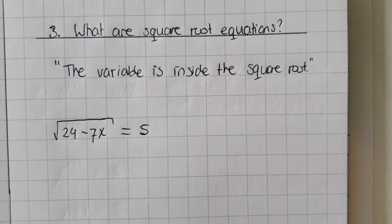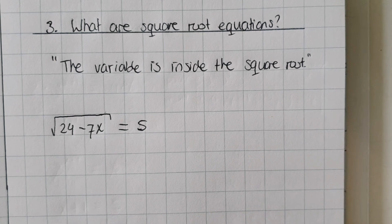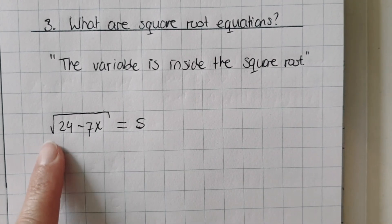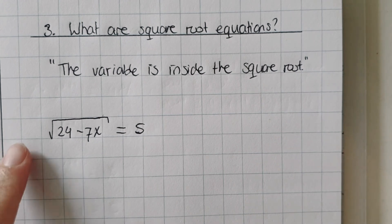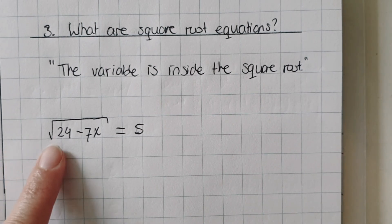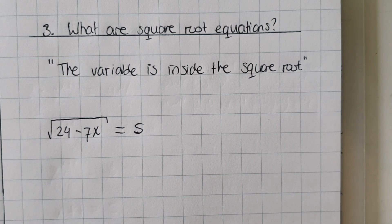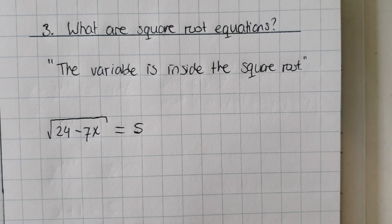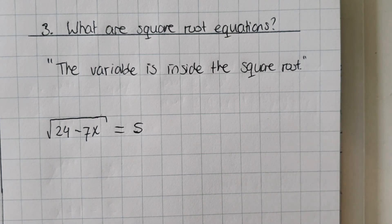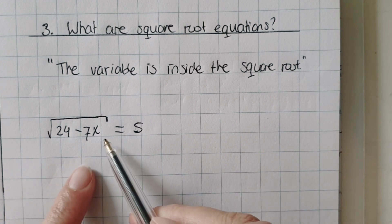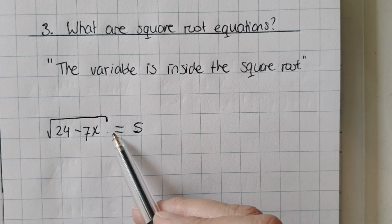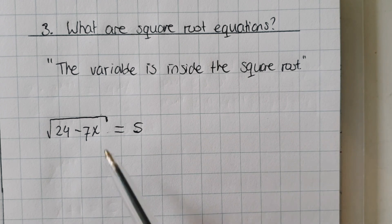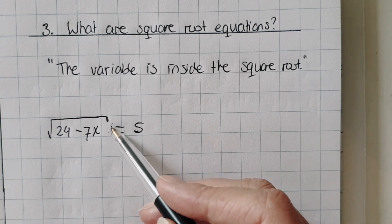What are square root equations? In square root equations, the variable is inside the square root. For example, the x — the variable — is inside of the square root. Sometimes you have it outside, for example 3x plus square root of 16, then there's no variable in the square root, so that is not a square root equation. Also important: make sure you finish the square root with the closing line, because sometimes it's not clear if a number like plus 1 is inside the square root or outside.